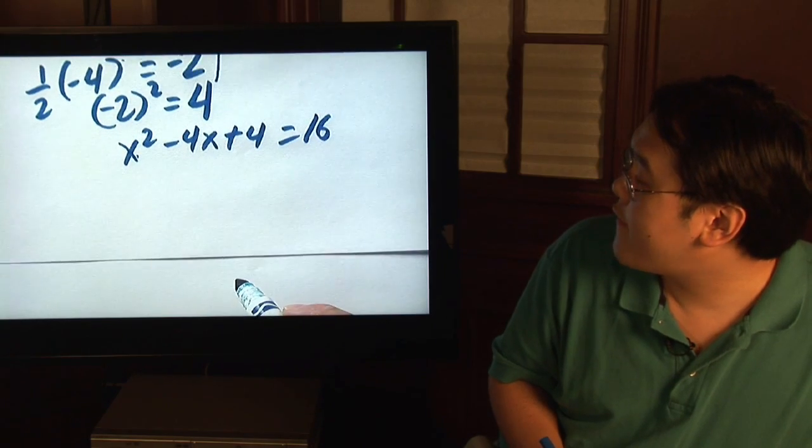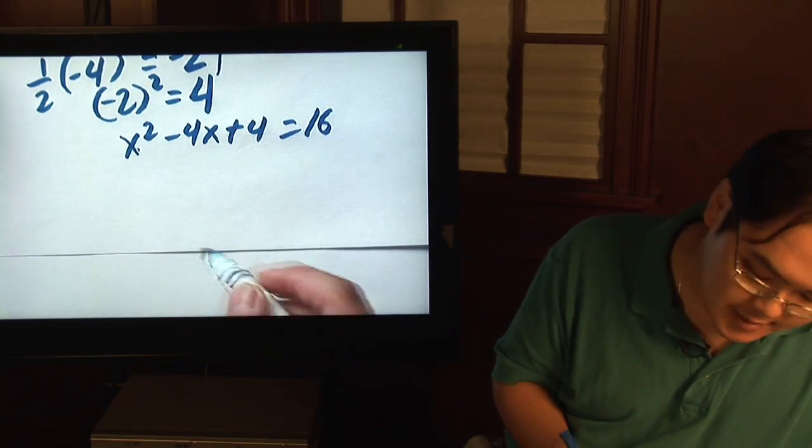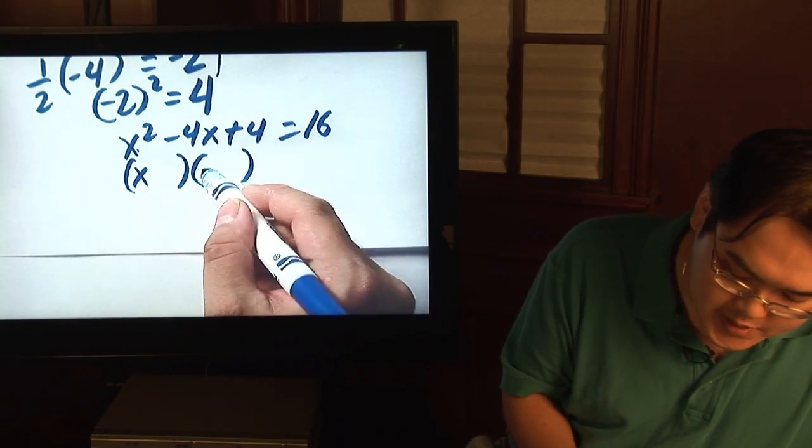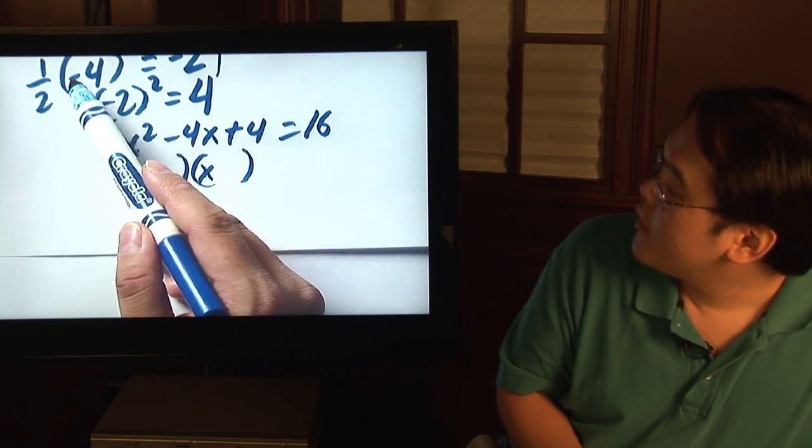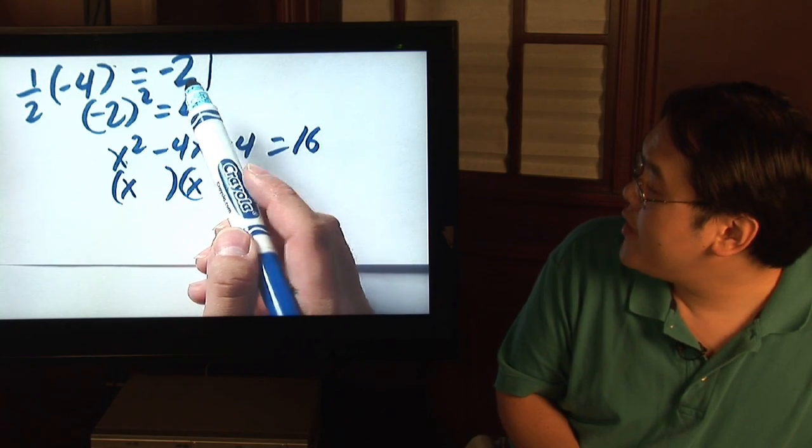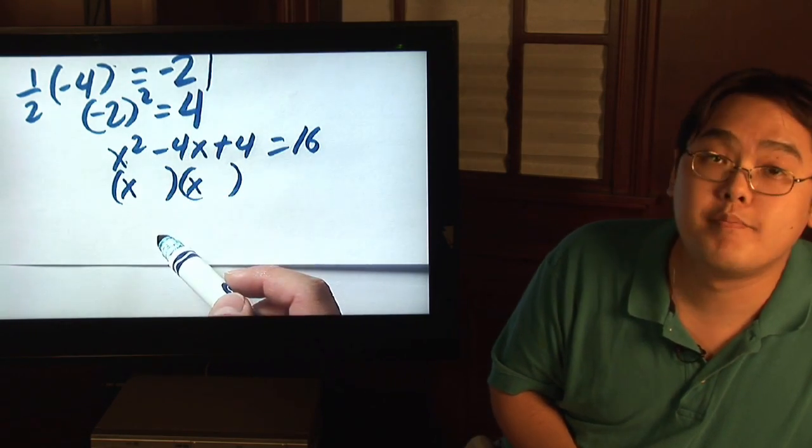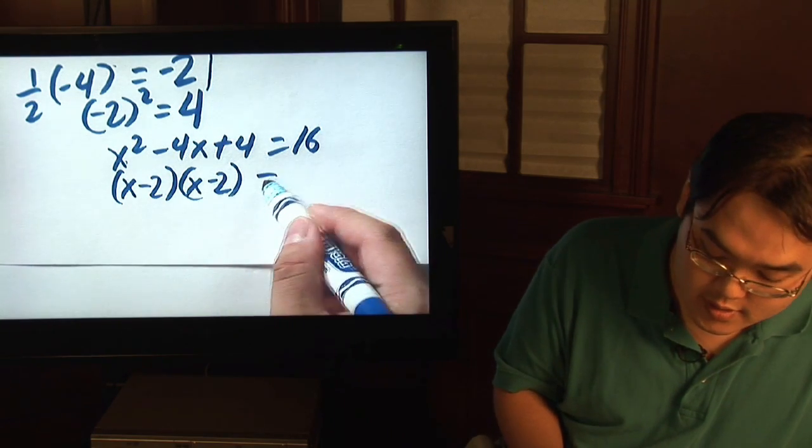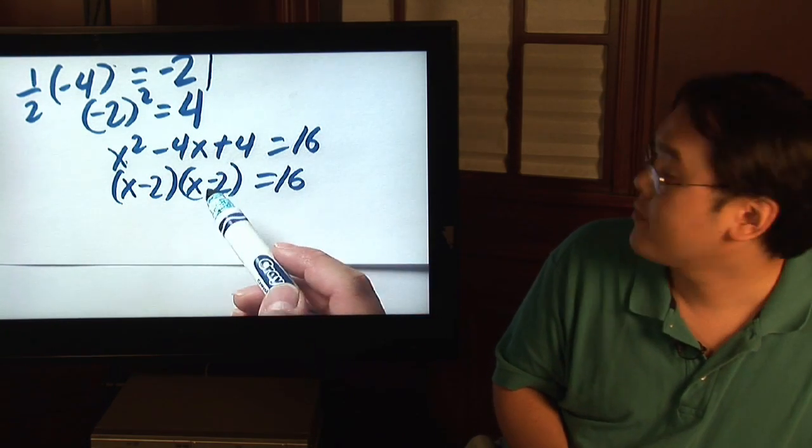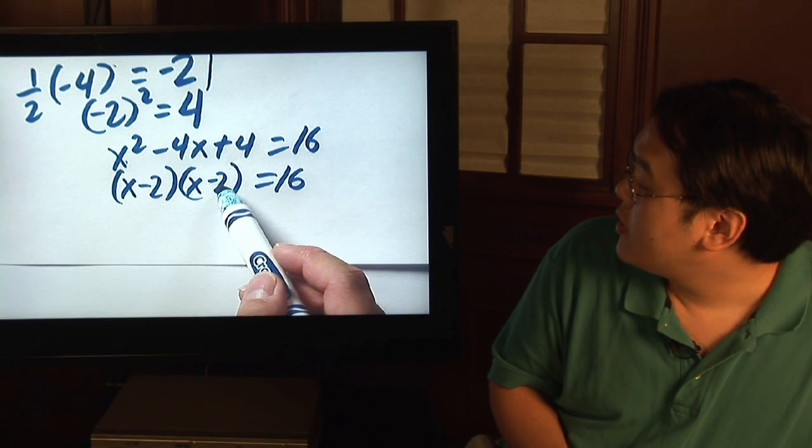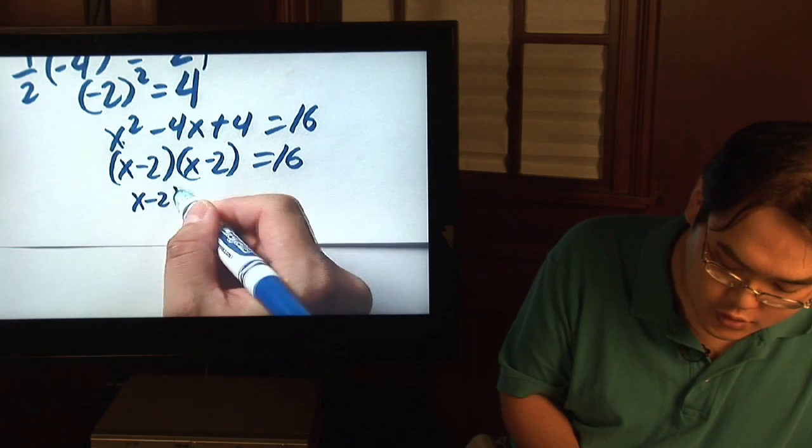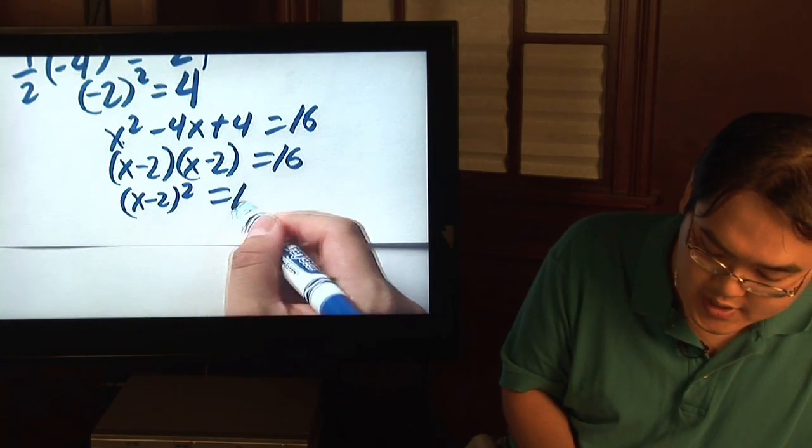From here, you can factor the left-hand side. x squared breaks up to x and x. But one half of negative 4 equals negative 2. That number is going to take the place of both parentheses, negative 2 and negative 2. It will always work out that way. Because two of them have the same parentheses, you can rewrite it as x minus 2 squared equals 16.